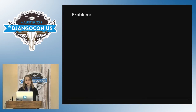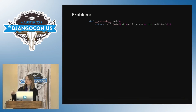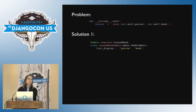To recap, the problem is our Unicode definition is a join of self.patron and self.book. Because it's in a Unicode method, Django can't see that these are foreign keys and that it should be using select_related. We have a couple of solutions. Solution one is to use list_display and explicitly include those foreign keys. If you use a foreign key in list_display, Django is smart enough to know to use select_related in that case — it doesn't know to use it if the foreign keys are inside a callable, only if you use them in list_display.